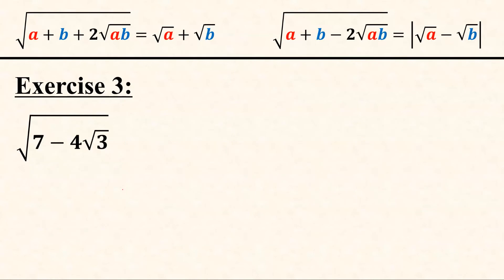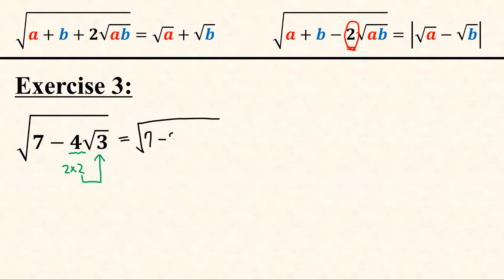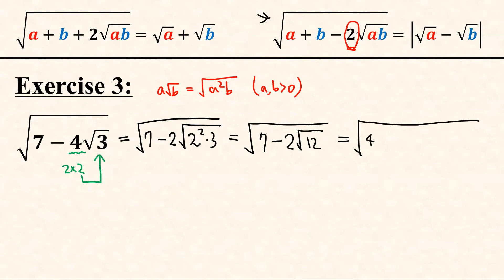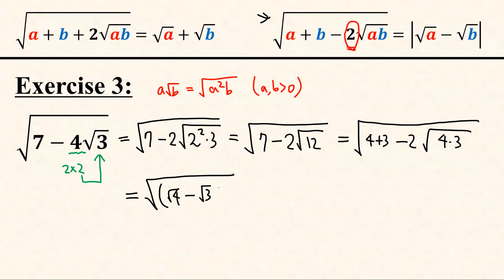Now let's look at the third problem: square root of (7 minus 4 times square root of 3). Here we must adjust the expression so that the number 2 appears in front of the inner radical. Since 4 equals 2 times 2, we move this 2 inside the inner radical sign. We get 7 minus 2 times square root of (2 squared times 3), which equals 7 minus 2 times square root of 12. Now we apply our method: 7 is 4 plus 3, and 12 is 4 times 3. So this equals (square root of 4 minus square root of 3) squared, giving square root of 4 minus square root of 3, which is 2 minus square root of 3.